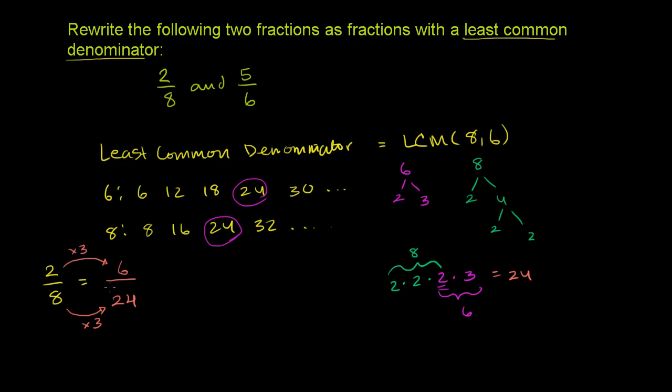So 2 eighths is the exact same thing as 6 twenty-fourths. To see that a little bit clearer, you say, look, if I have 2 eighths and if I multiply this times 3 over 3, that gives me 6 over 24. And this and this are the same fraction, because 3 over 3 is really just 1. It's one whole. So 2 eighths is 6 twenty-fourths.